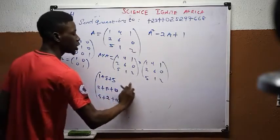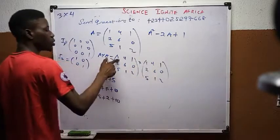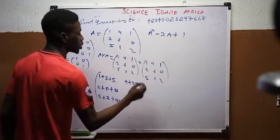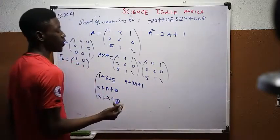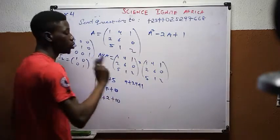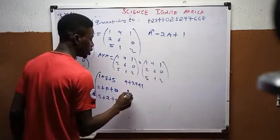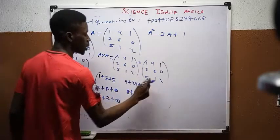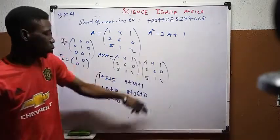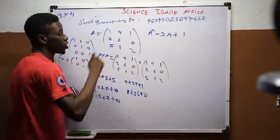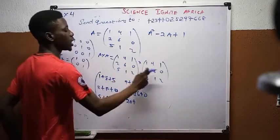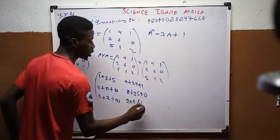Moving to column 2. Row 1, column 2: 1×4 = 4, plus 4×6 = 24, plus 1×1 = 1. Row 2, column 2: 2×4 = 8, plus 6×6 = 36, plus 0×1 = 0. Row 3, column 2: 5×4 = 20, plus 1×6 = 6, plus 2×1 = 2.